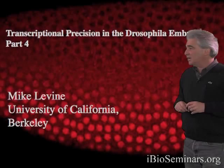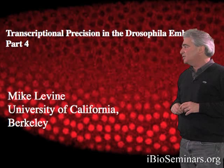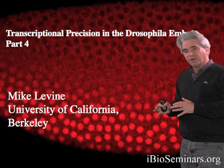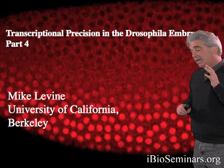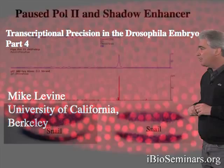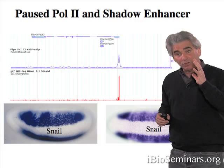I've discussed two mechanisms of transcriptional precision in the early Drosophila embryo: shadow enhancers and pause polymerase. These two mechanisms ensure robust, rapid, and uniform patterns of gene activation, and when used together, very rapid rates of RNA synthesis. I want to finish up by discussing mechanisms of transcriptional repression.